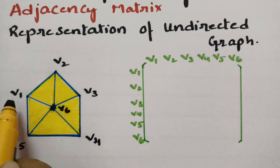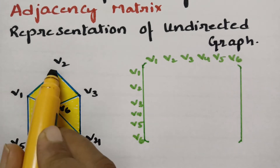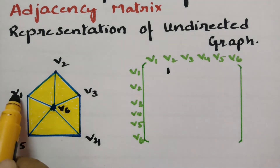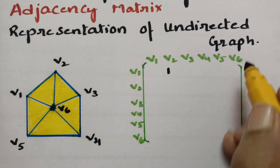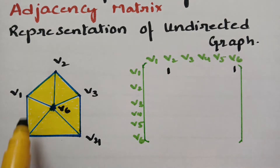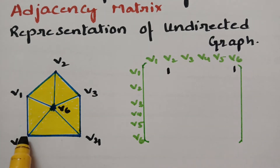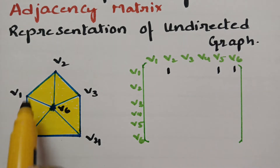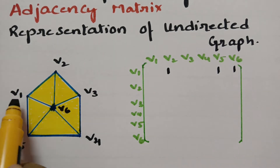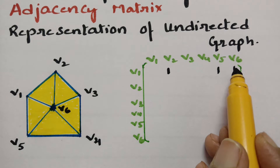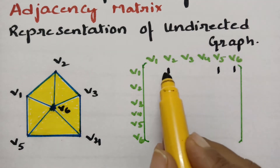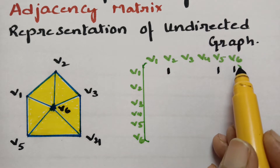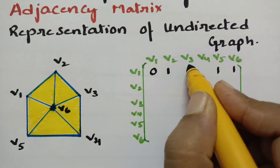First I'm going with V1. V1 has an edge with V2, so I'm putting 1 here. V1 has an edge with V6, so I'm putting 1 here. And V1 has an edge with V5, so here is 1. There are three edges for V1. I keep 1 for each edge — V2, V5, and V6 — and the remaining are all zeros.